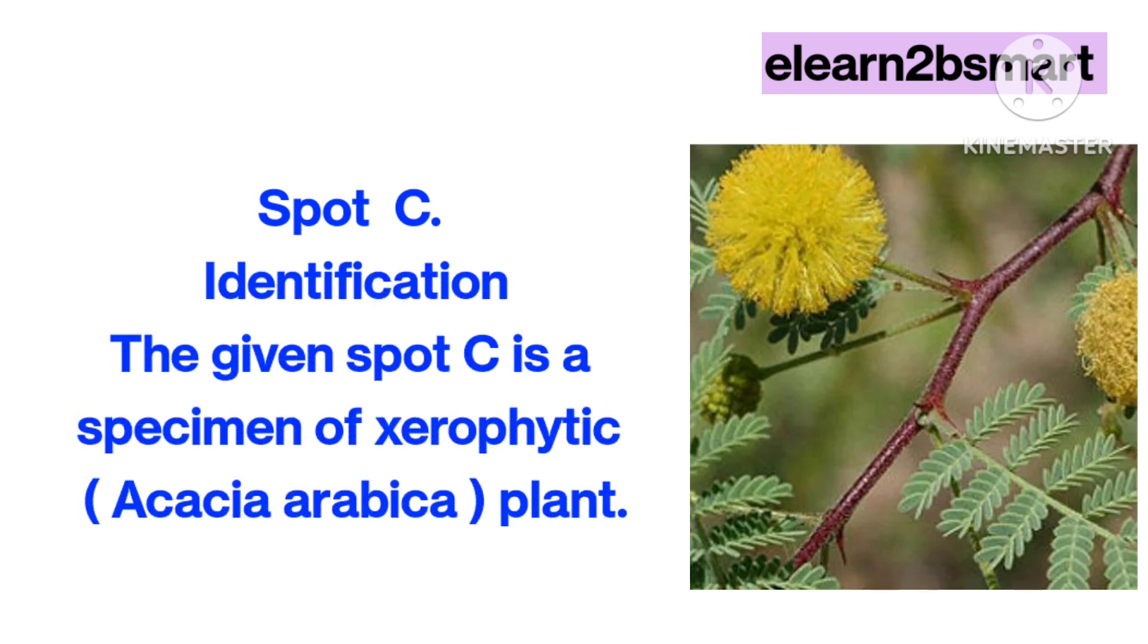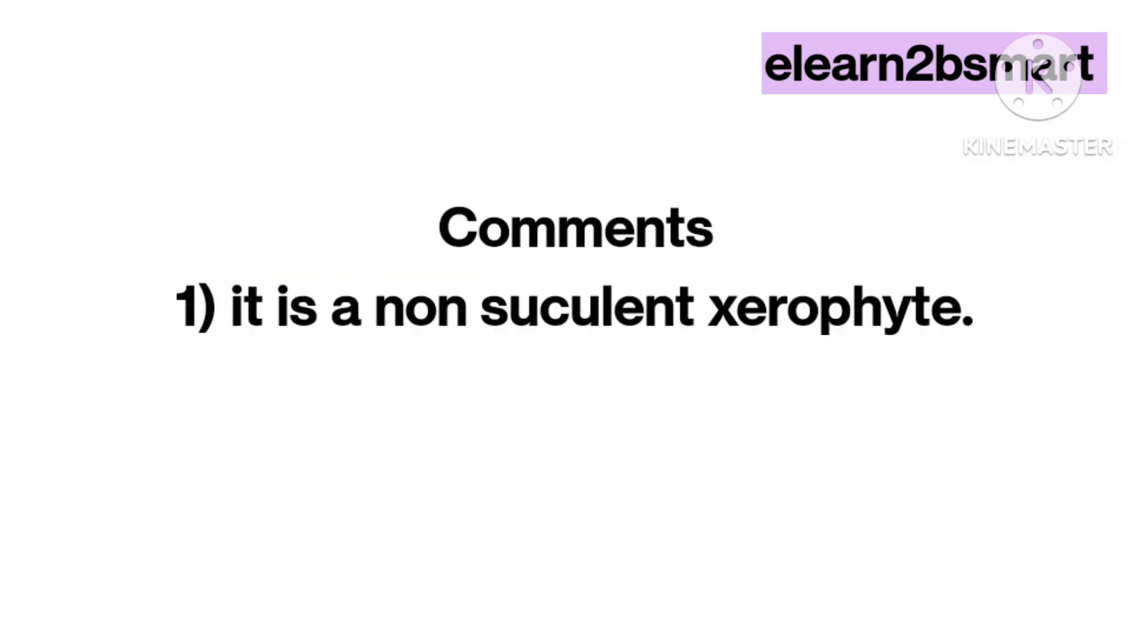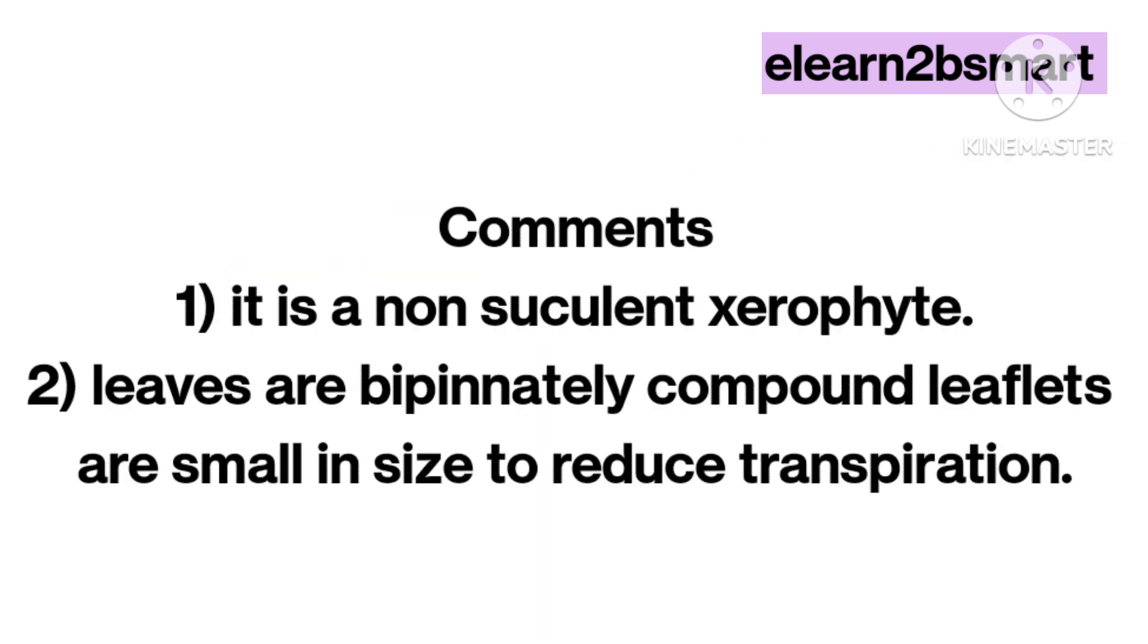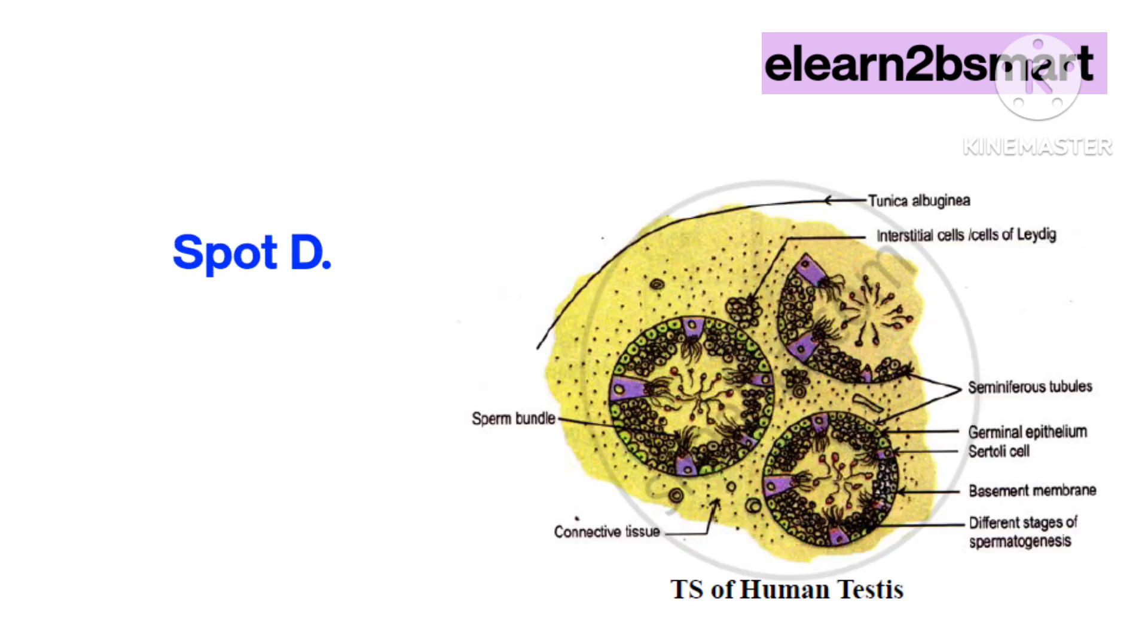Spot C identification: The given spot C is a specimen of xerophytic plant, Acacia Arabica. Comments: 1. It is a non-succulent xerophyte. 2. Leaves are bipinnately compound; leaflets are small in size to reduce transpiration.